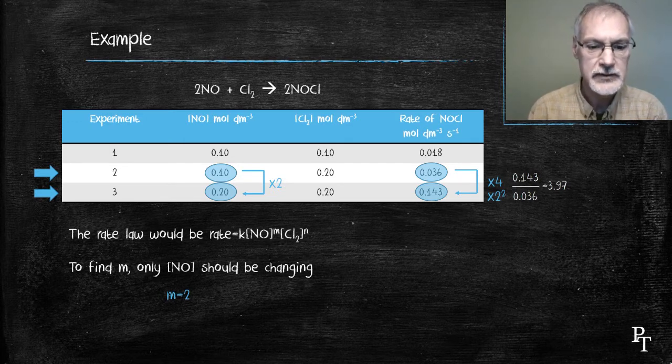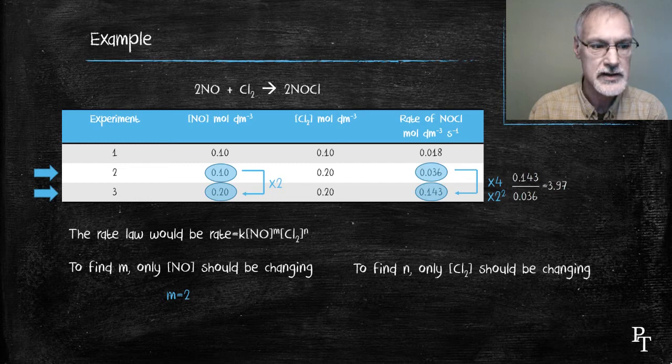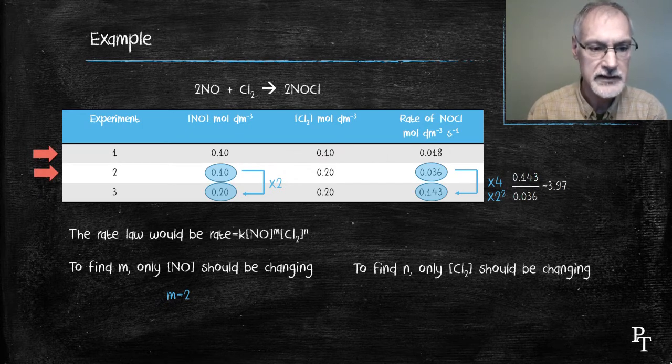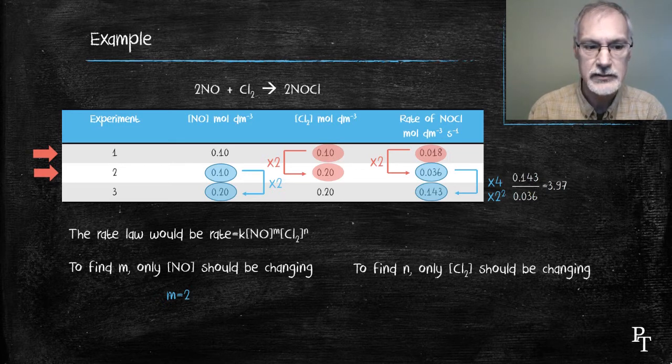In a similar fashion, to find out the exponent for the chlorine, I only want to study those experiments where the chlorine concentration is changing. In that situation, I would consider only experiments 1 and 2. In that situation, I've doubled the chlorine. I haven't changed the nitrogen oxide, but I've also doubled the rate of my reaction.